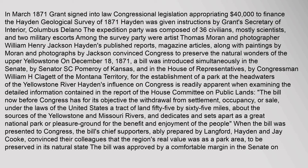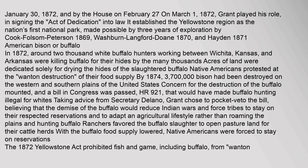On December 18, 1871, a bill was introduced simultaneously in the Senate by Senator S. C. Pomeroy of Kansas and in the House by Congressman William H. Clagett of the Montana Territory, for the establishment of a park at the headwaters of the Yellowstone River. The bill was approved by a comfortable margin in the Senate on January 30, 1872, and by the House on February 27. On March 1, 1872, Grant signed the Act of Dedication into law, establishing the Yellowstone region as the nation's first national park.